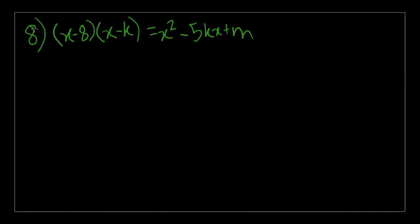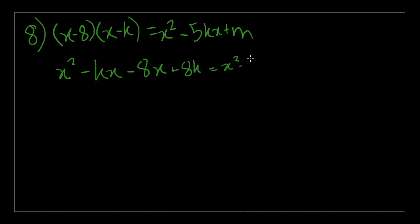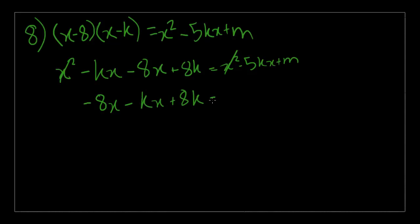For starters, let's FOIL out the left side of the equation — first, outer, inner, last. x times x is x squared, then minus kx minus 8x, and minus 8 times minus k is plus 8k. That is equal to x squared minus 5kx plus m.